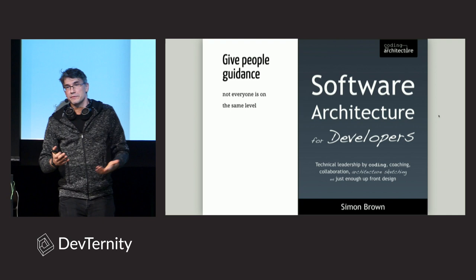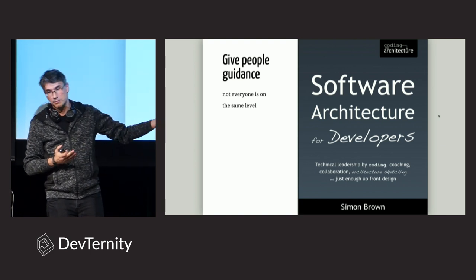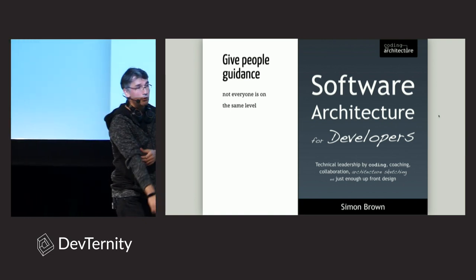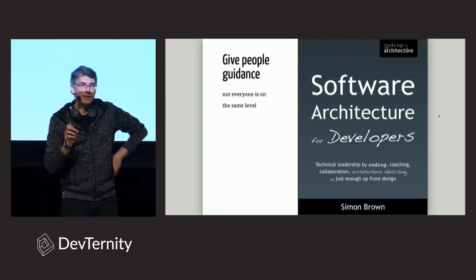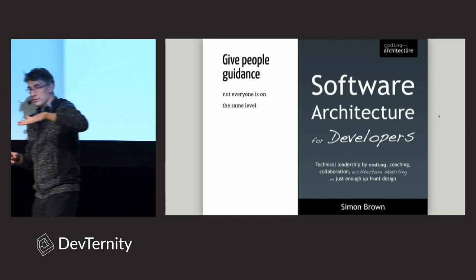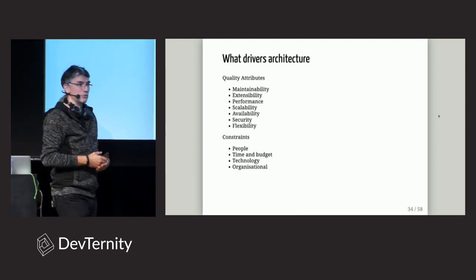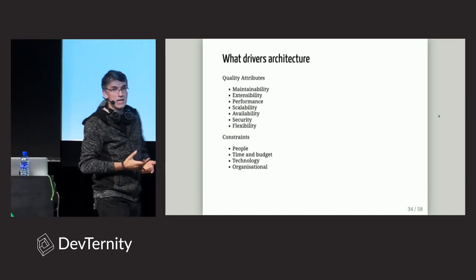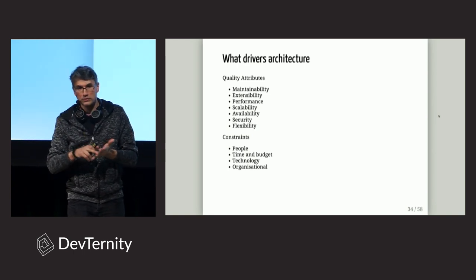It turns out that thanks to peer pressure — a lot of teams having a say in the architecture guild — there are not too many situations where teams break recommendations. But to provide guidance, you need shared understanding and knowledge. I found that not too many developers read books on architecture, so I started promoting the book by Simon Brown. It's a boring book if you have a lot of experience, but then you find one chapter and you're like — I should have known that before. It levels up the knowledge of everyone in the guild.